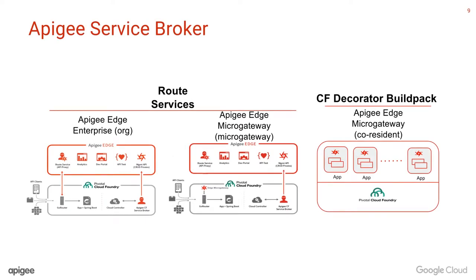This brings us to the Apigee Service Broker, which has three different types of plans. We have the org plan and the micro gateway plan, which are considered as route services, and then we have the co-resident plan, which is considered to be a decorator build pack.